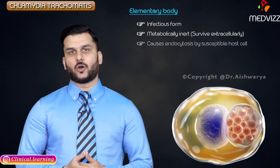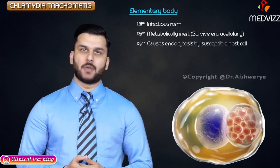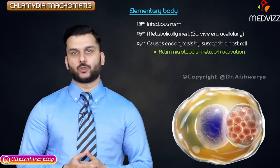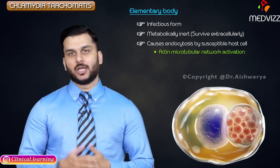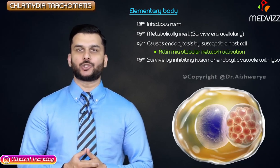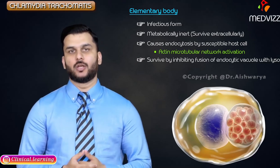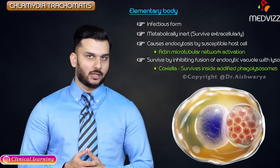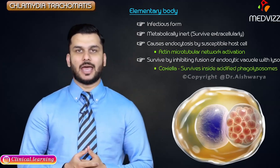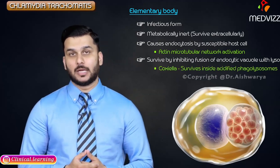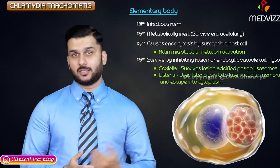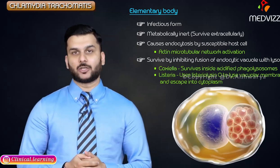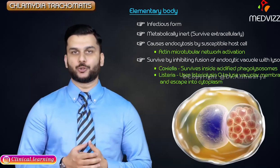The elementary body can cause endocytosis by the susceptible host cell via actin microtubular network activation. It survives by inhibiting fusion of the endocytic vacuole with lysosomes. Compare this to Coxiella, which survives inside an acidified phagolysosome, and Listeria, which uses listeriolysin O to lyse the vacuolar membrane and escape into the cytoplasm.